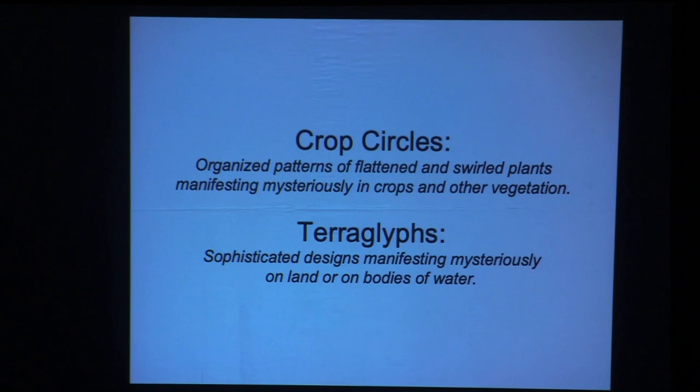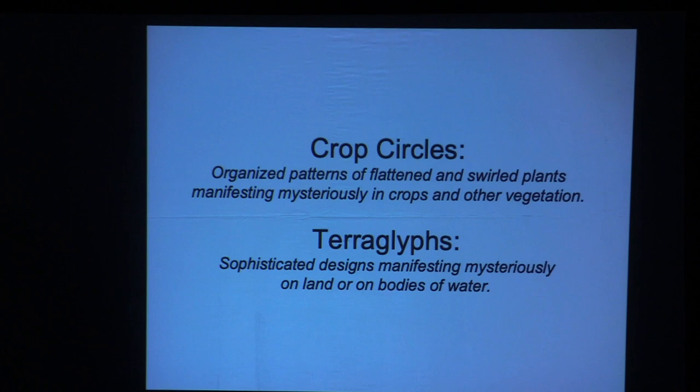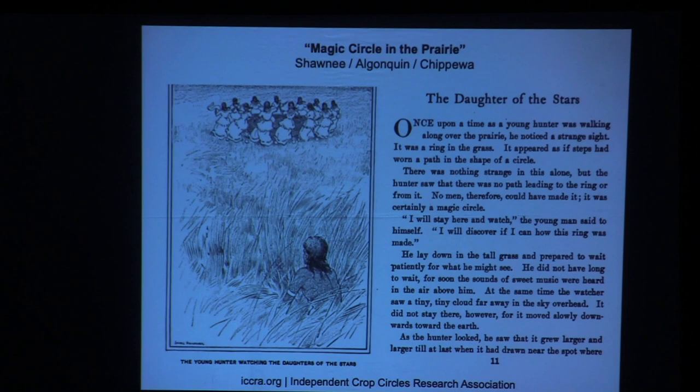I'm going to be telling you about things besides crop circles — these organized patterns of flattened and swirled plants that manifest mysteriously in crops and other vegetation. I'll also be talking about pteroglyphs — mysteriously appearing designs elsewhere, other than on farmers' fields in vegetation, even on bodies of water.